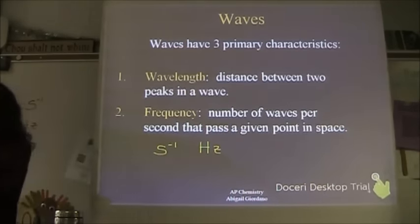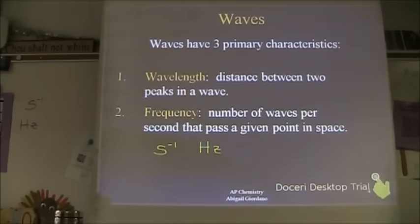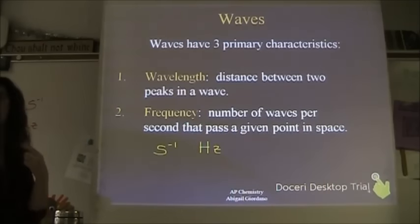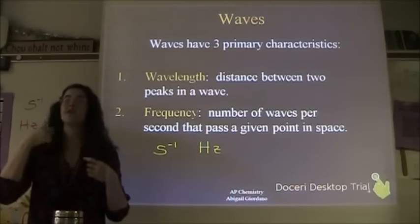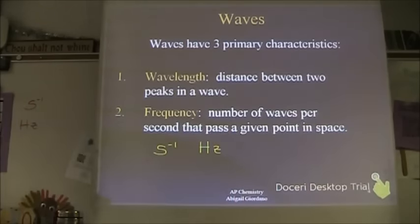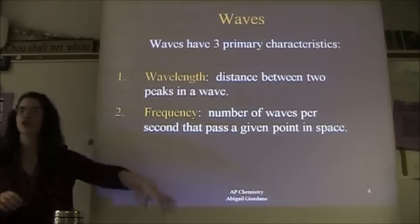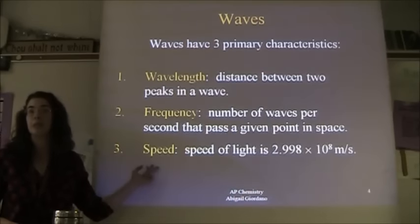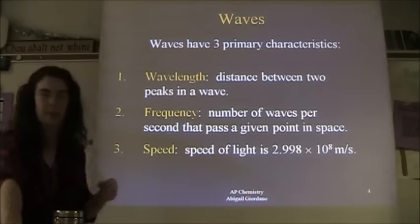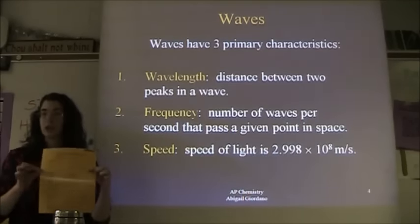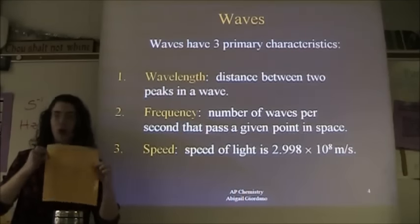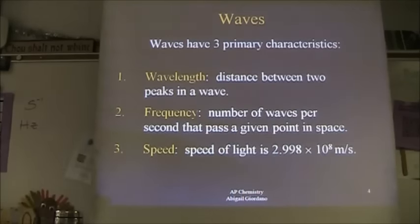For example, if you listen to DC 101, the 101.1 on your radio is in units of megahertz — that number is the station's frequency. All electromagnetic radiation shares one thing in common: its speed, the speed of light. You do not need to memorize this number; it is on your equation sheet in the atomic structure section. It's a constant and it's given to you.